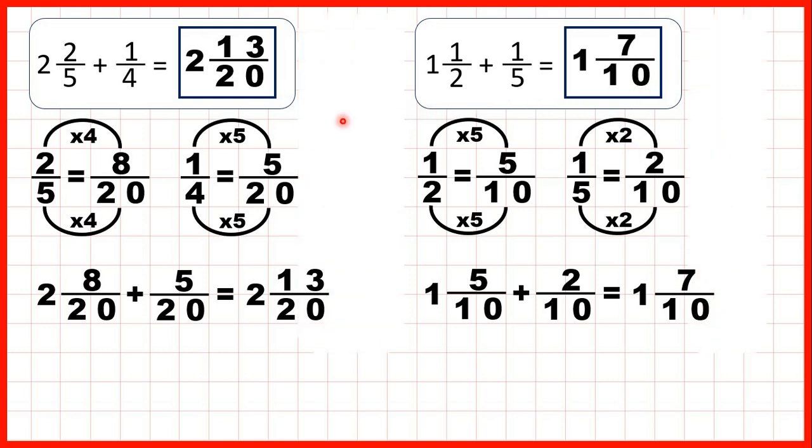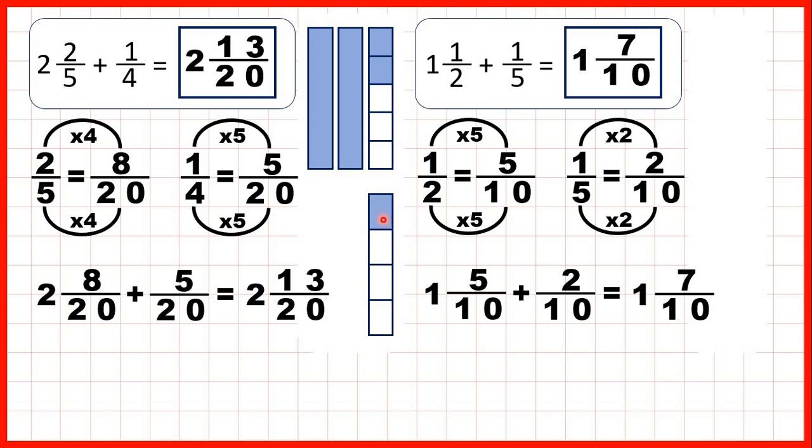So let's show fraction bars to see what we did here. We started with 2 and 2 fifths, and we were adding 1 quarter. We changed those 2 fifths into 8 20ths and the 1 quarter into 5 20ths.